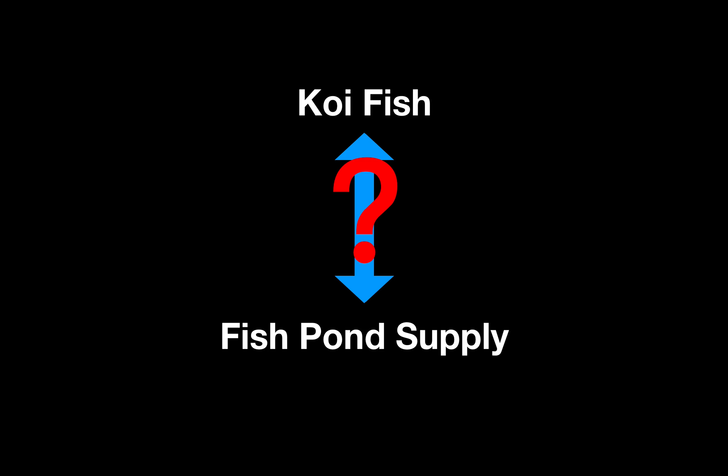Our solution is that instead of going back and forth between query keywords, we try to generate keywords directly from the user's query. So in this case, when we see the user's query as 'koi fish,' we try to generate 'fish pond supply.'